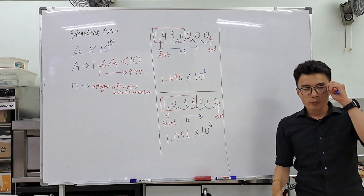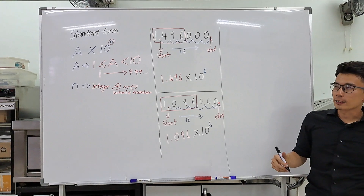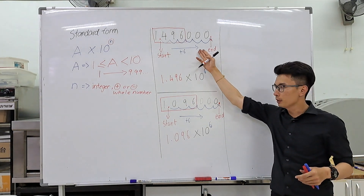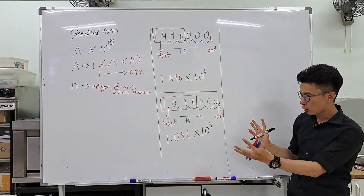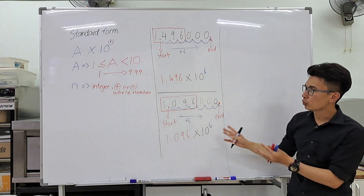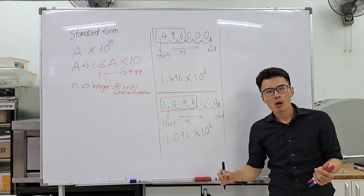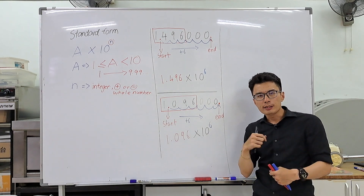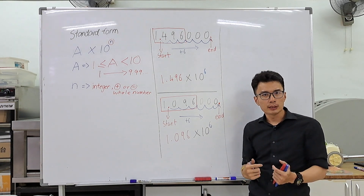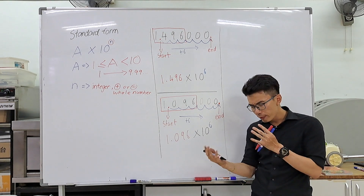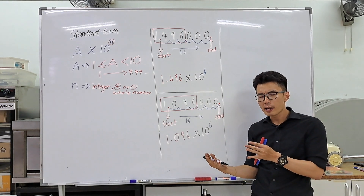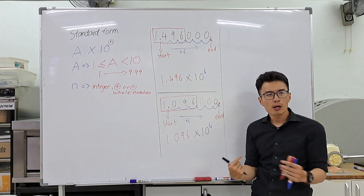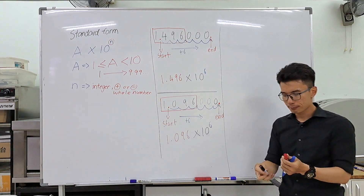Earlier we looked at an example with a big number and converted it into standard form. What if I did the opposite? I have a very small number and I want to change it to standard form. How do I do that?